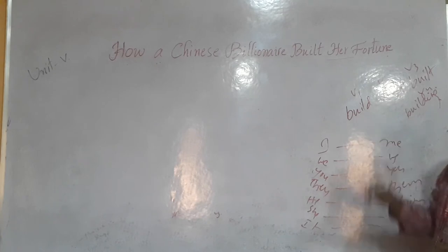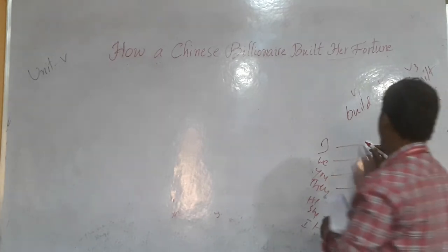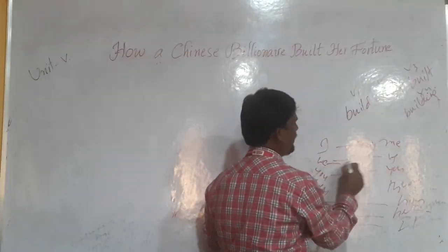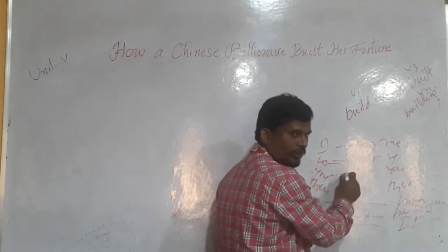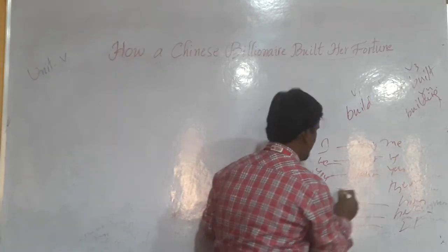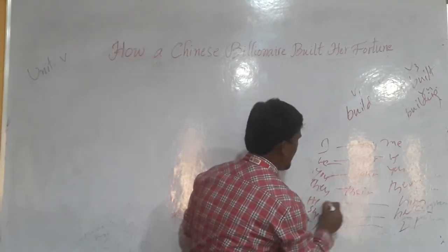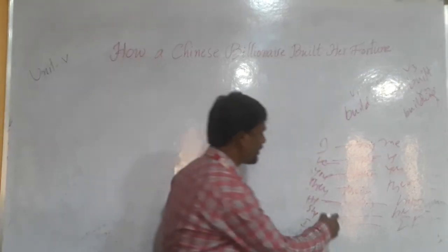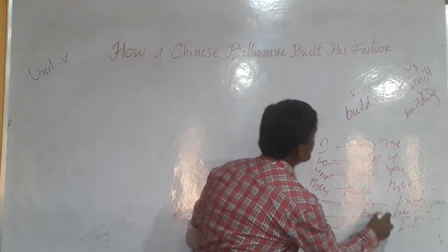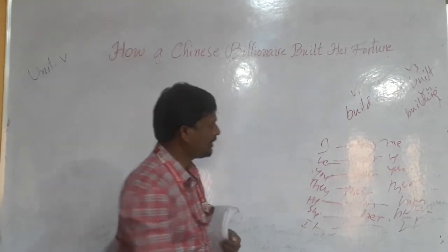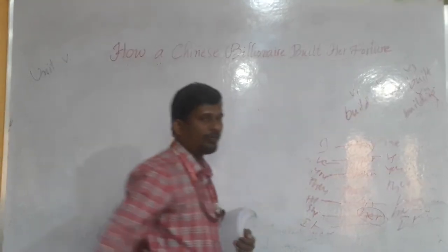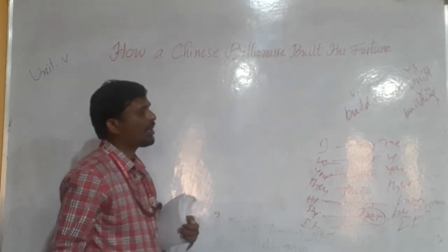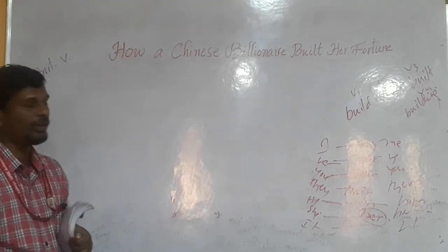So here in the middle we will see some possessive pronouns like for I, my; for we, our; for you, your; and they, their; and he is here. Our point is here, she means her. So here her is there, this is possessive pronoun.